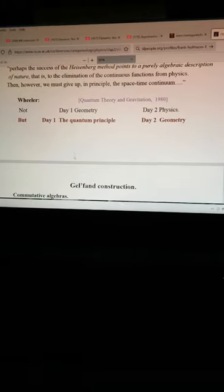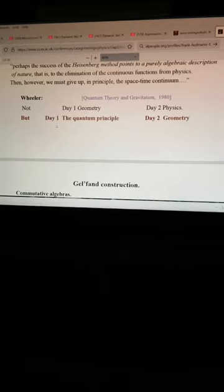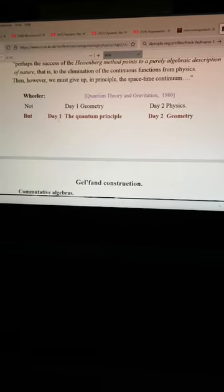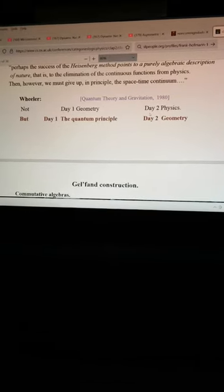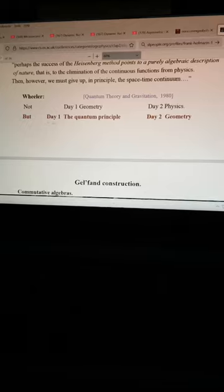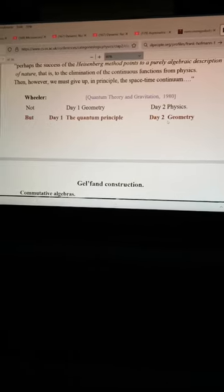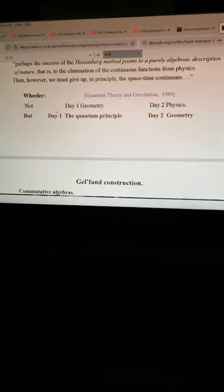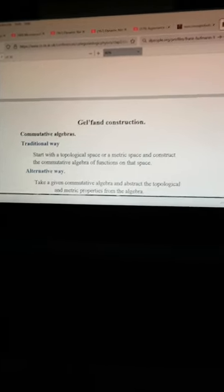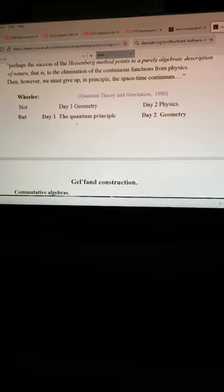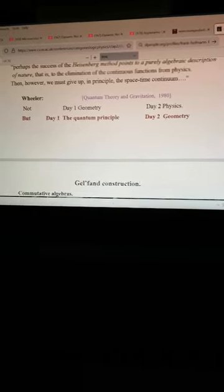And then this gets back to the it from bit, Wheeler concept. Not geometry, physics, but quantum, and then geometry, and then physics. So it's another one-step abstraction. So that's quite fascinating that the quantum non-commutativity is before mathematics.